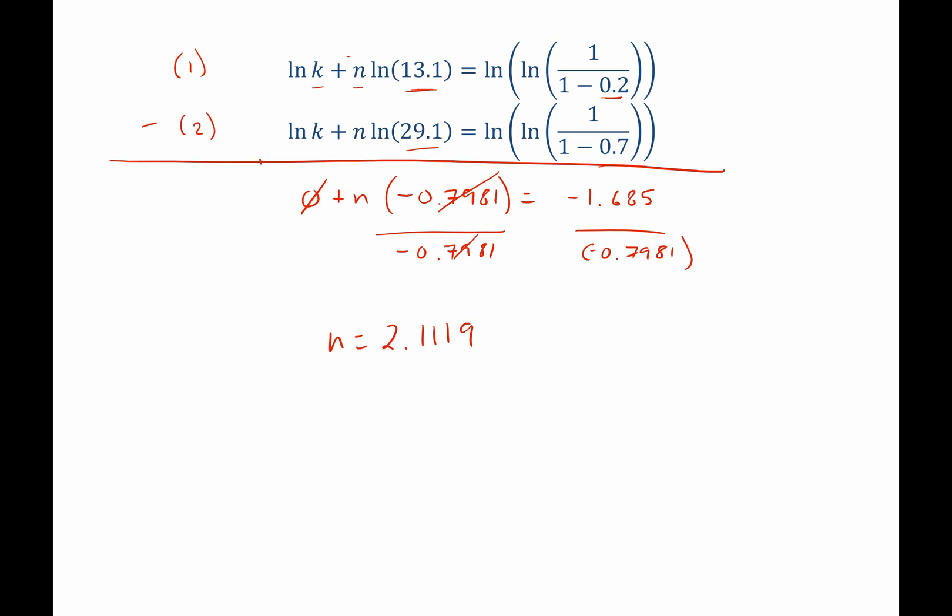And now that we know n, we can go ahead and plug it back up into either of these two expressions from above. It doesn't matter which one. And then we can go ahead and solve for k. When I plug that in and solve for k, I find that k equals 9.75 times 10 to the negative 4th.